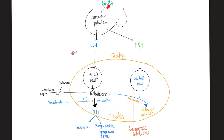In males: GnRH from the hypothalamus goes to the anterior pituitary, telling it to create LH and FSH. FSH goes to the Sertoli cell to maintain and sustain sperm, and to aromatize — converting testosterone into estrogen. Men do have some estrogen, but they have much more androgens. Conversely, women have lots of estrogens and progesterone with some androgens. Luteinizing hormone goes to the Leydig cell to secrete testosterone, which is then converted into the more potent dihydrotestosterone. The enzyme that converts testosterone to dihydrotestosterone is 5-alpha reductase. The enzyme that converts testosterone into estrogen is aromatase.